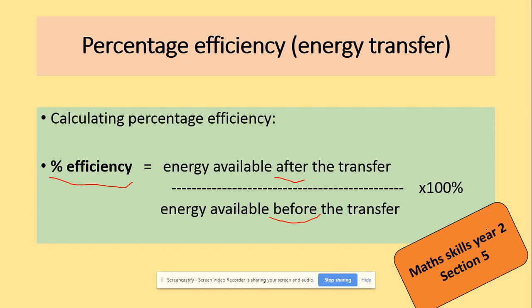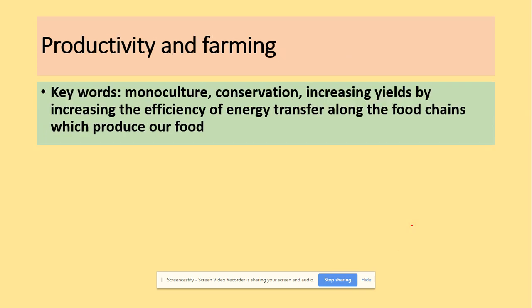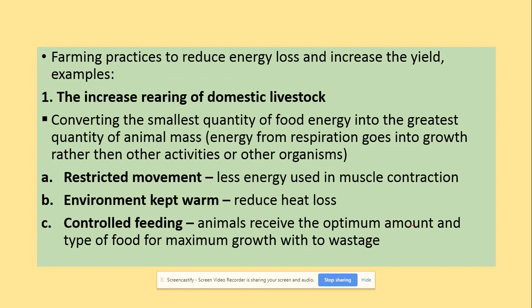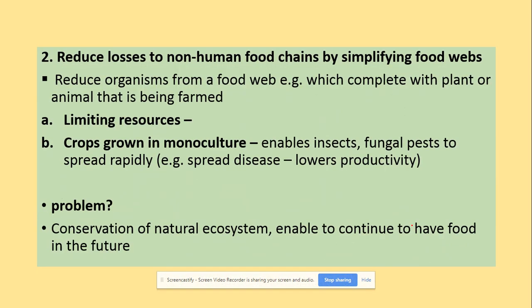In terms of productivity and farming, you might get questions asking you to suggest reasons. Here I'd recommend referring to terminology like monoculture, conservation, and increasing yields by increasing the efficiency of energy transfer along food chains. Farming practices reduce energy loss and increase yield by increased rearing of domestic livestock, restricted movement, keeping the environment warm, and controlled feeding. Reduced losses to non-human food chains can be achieved by simplifying food webs — reducing organisms from a food web.